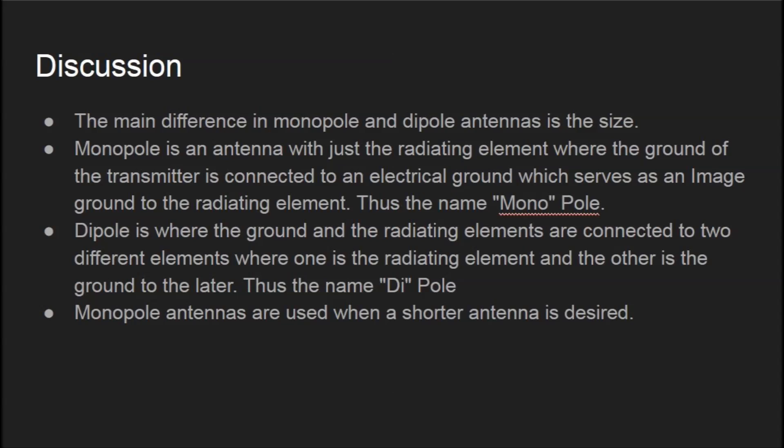The monopole only has the one element. The dipole is where the ground and the radiating elements are connected to two different elements — one is the radiating element and the other is the ground. Thus the name dipole, as there are two radiating elements. Monopole antennas are used when a shorter antenna is desired due to their size.